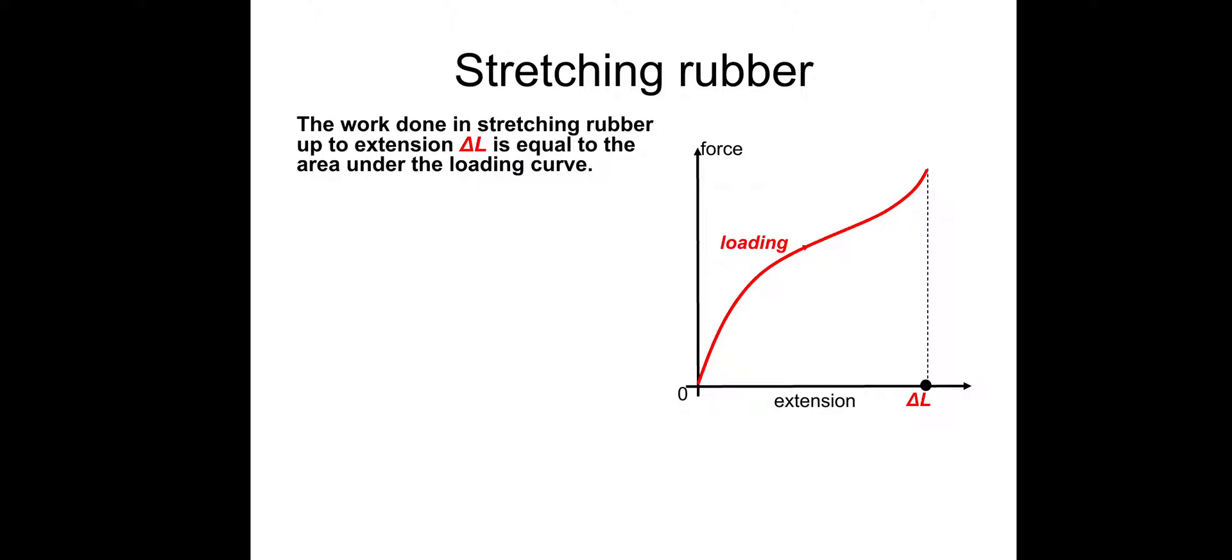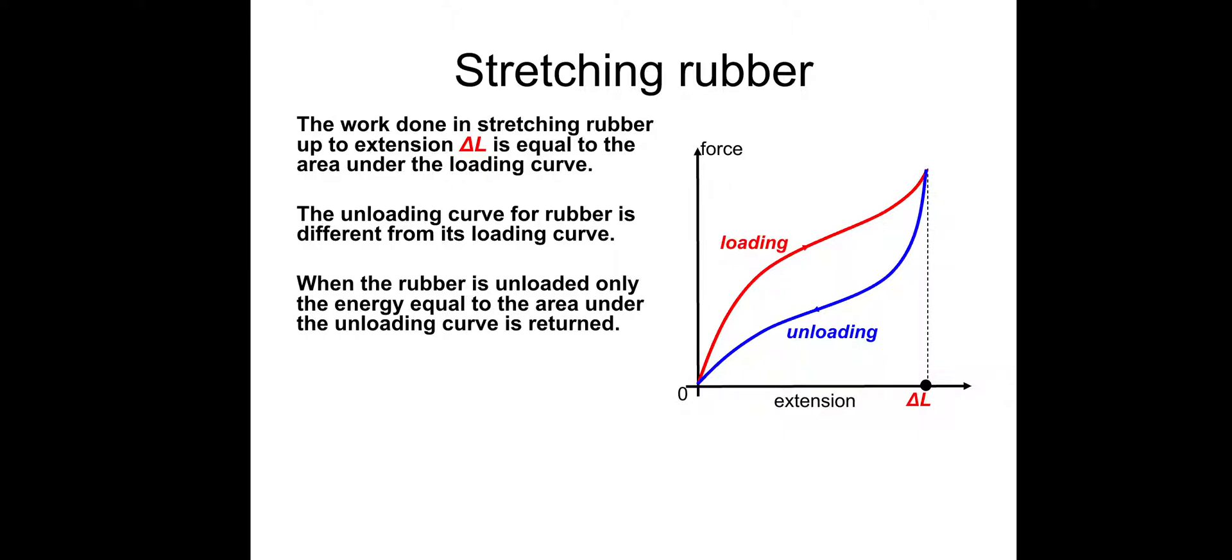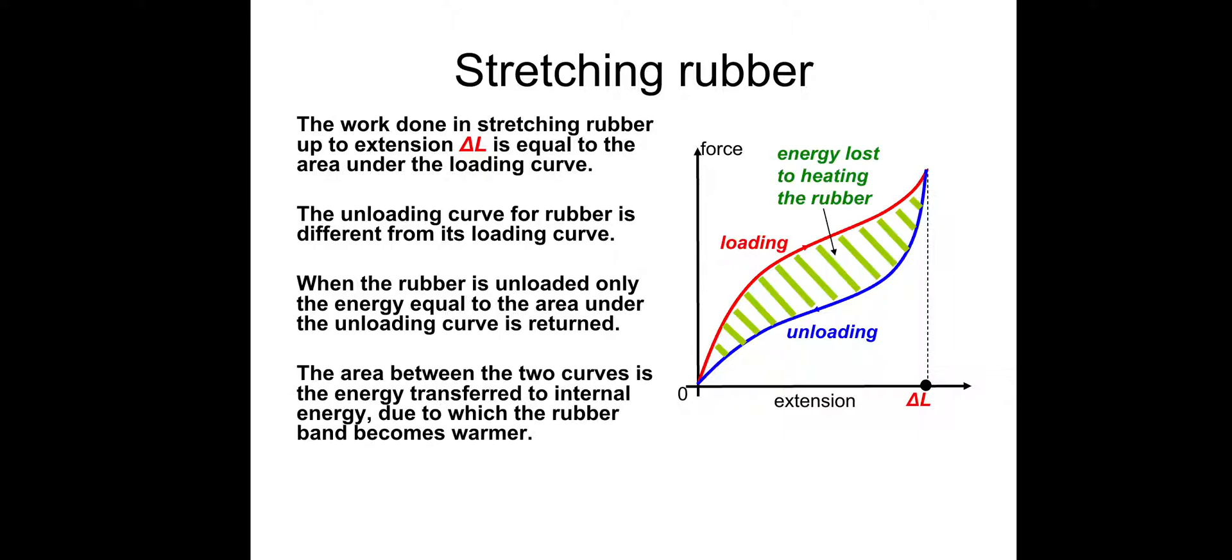Let's talk about stretching something like rubber. The work done in stretching rubber up to an extension delta L or extension E is equal to the area under the loading curve. So there's the loading curve. This is what it looks like for rubber. And then when you unload rubber, it comes back down like this. The unloading curve for rubber is different from the loading curve. When the rubber is unloaded, only the energy equal to the area under the unloading curve is returned. So that leaves this area, the middle ground, the area between the two curves, is the energy transferred to internal energy. Due to which the rubber band becomes warmer. And you all know that. If you get an elastic band and keep stretching it and unloading it and loading it, the rubber material will just hold heat. Its internal energy will increase.